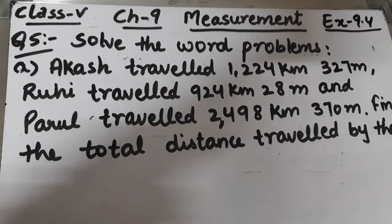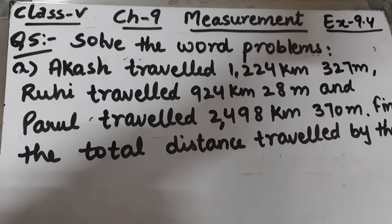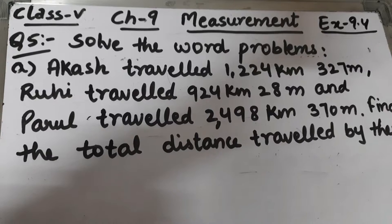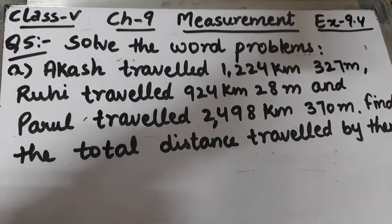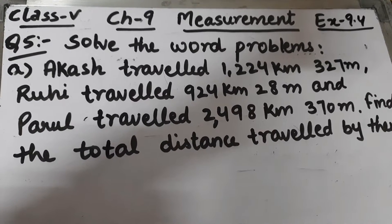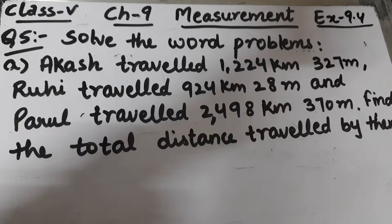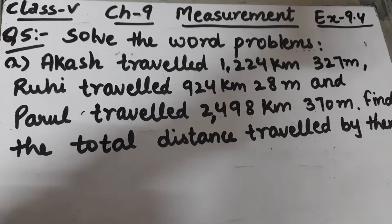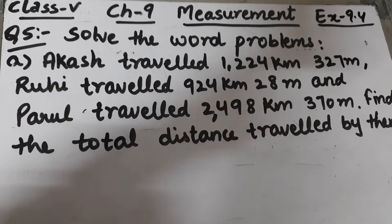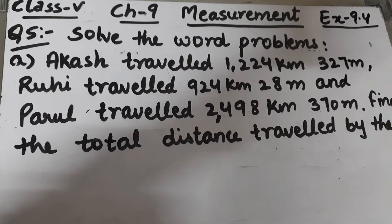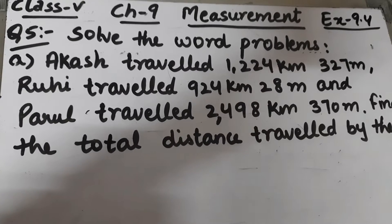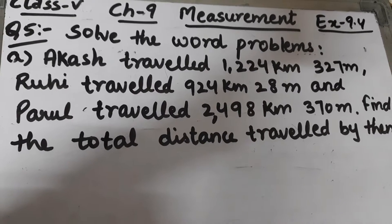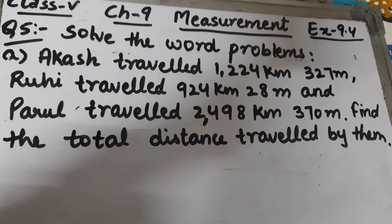Let's start question number five of Exercise 9.4. The question is: solve the word problems. Part A — Akash traveled 1224 kilometers 327 meters, Ruhi traveled 924 kilometers 28 meters, and Parul traveled 2498 kilometers 370 meters. Find the total distance traveled by them.